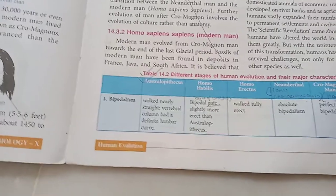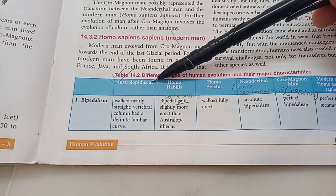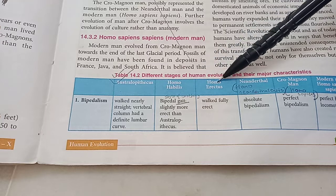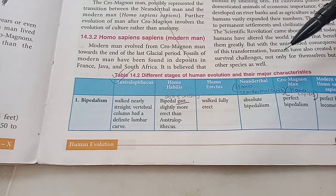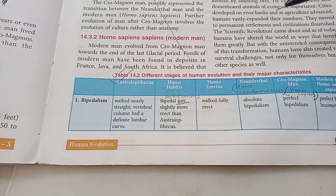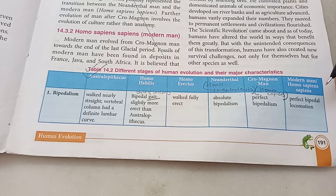Now let's talk about the different species which gave birth step by step to Homo sapiens. We'll talk about six of them: Australopithecus — our ancestor — then Homo habilis, Homo erectus (as the name suggests, it was erect), Neanderthal man also called Homo neanderthalensis, Cro-Magnon man also called Homo sapiens, and then the modern man which is Homo sapiens sapiens. Sapiens means intelligent, so sapiens sapiens means very intelligent.